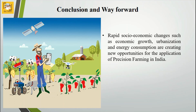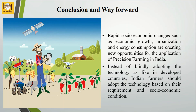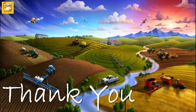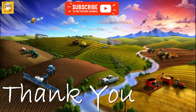To conclude, rapid socioeconomic changes such as economic growth, urbanization, and energy consumption are creating new opportunities for the application of precision farming in India. Instead of blindly adopting the technology as in developed countries, Indian farmers should adopt the technology based on their own requirements, their farm's requirements, and their social and economic conditions.